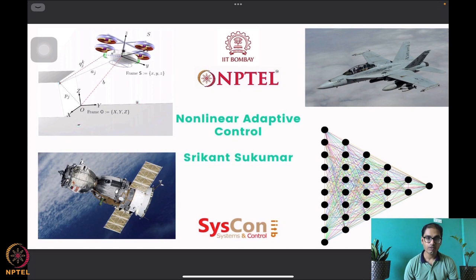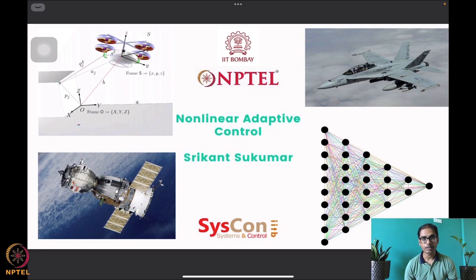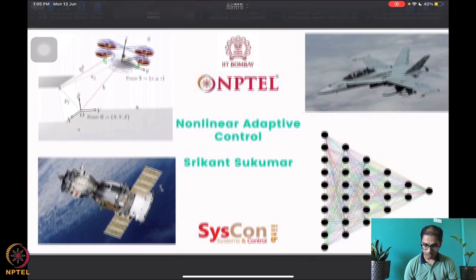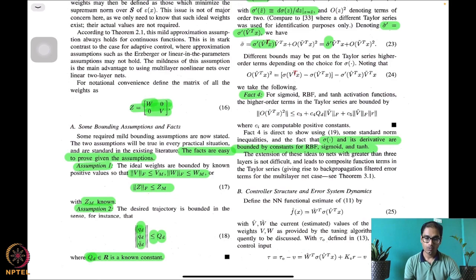We started this week by looking at connections between adaptive control and learning, and we are now focusing on a specific problem: a multi-layered neural network being tuned using an adaptive controller. This three-layer neural network is used to design an approximation-based controller for a robotic manipulator. We hope these algorithms will help you design robust adaptive control for aircraft, drones, spacecraft, and similar systems.